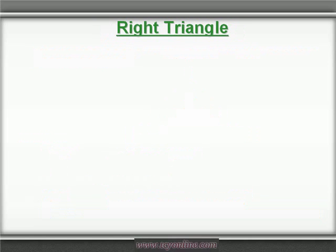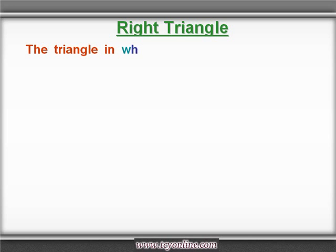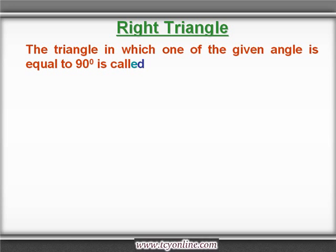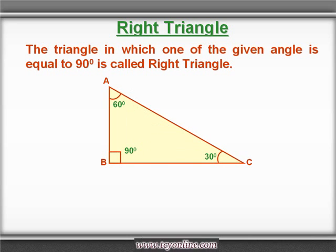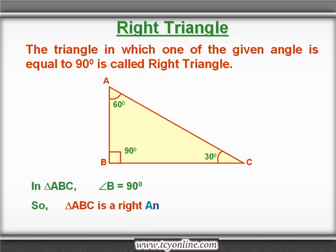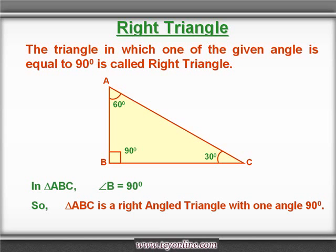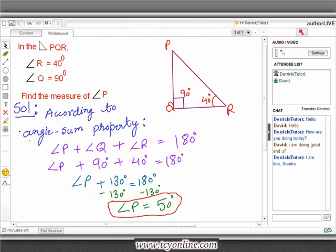Now let's learn about one more type of triangle: the right triangle. A right triangle is one in which the measure of one of the angles is 90 degrees, or we can say one of the angles is a right angle. See in the picture — in triangle ABC, the measure of angle B is 90 degrees, so it is a right triangle.